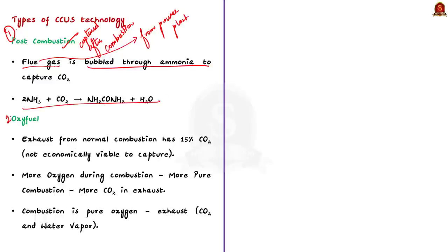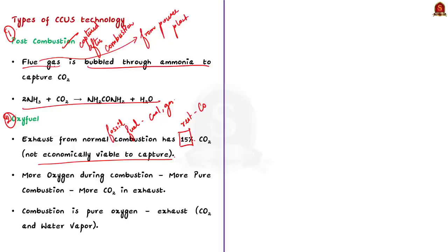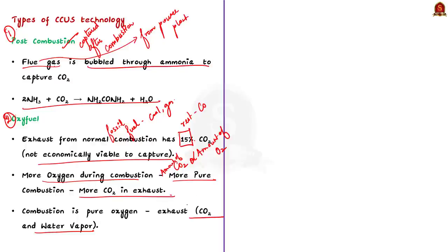The second type is the oxy-fuel system. When fossil fuel like coal, petroleum or natural gas is burnt, the exhaust gas contains only about 15% carbon dioxide, making it uneconomical to capture. However, the amount of CO₂ in exhaust gas increases with increased oxygen supply during combustion. So if fossil fuels are burnt in the presence of pure oxygen, the exhaust contains entirely carbon dioxide and some water vapor, and the CO₂ can then be easily captured by condensing the water vapor.